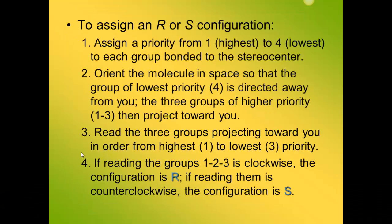Here are the guidelines for assigning R or S to a particular stereoisomer. First, prioritize the groups, assigning number one to the highest priority and four to the lowest. It's useful to make a model of the molecule and orient it so that the lowest priority group is directed away from you, and you're looking at the three remaining groups like a steering wheel. Then read the groups one to two to three. If the order is clockwise, you have the R stereoisomer. If the order is counterclockwise, you have the S stereoisomer.